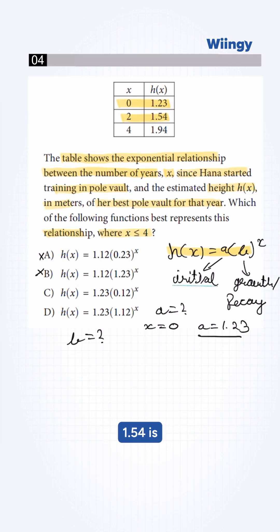So, the formula will be 1.54 equals 1.23 times b raised to 2. b squared will be 1.54 by 1.23, which is approximately 1.252.